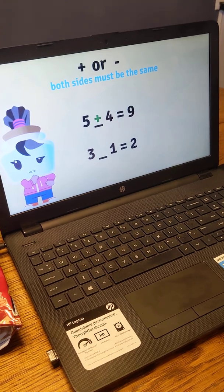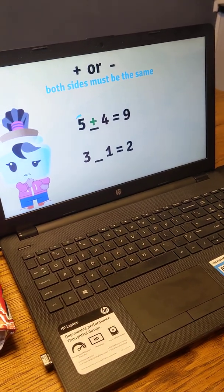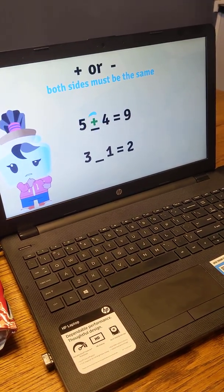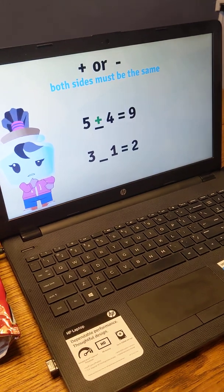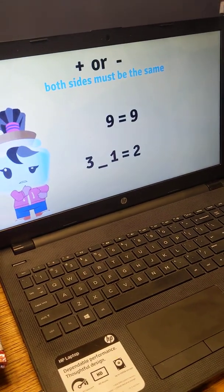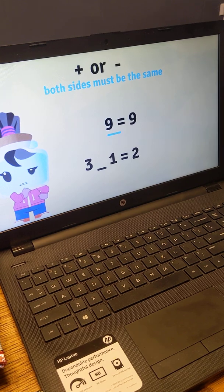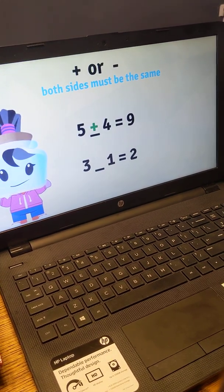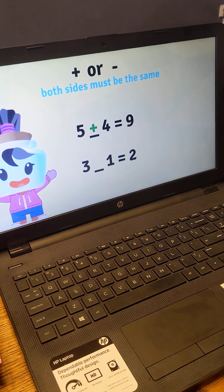Yeah. Let's see. 5 plus 4 equals 9. Okay. This makes the left side equal to the right side. Cool. So, plus is the correct answer.